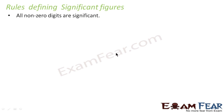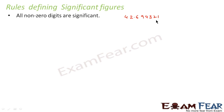There are certain rules which need to be followed for defining significant figures. The first rule: all non-zero digits are significant. For example, a number like 42.694321 — all are non-zero digits, so they are all significant. We have eight significant digits in this number.